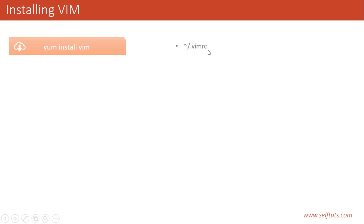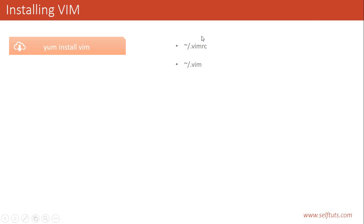Vim basically depends upon the .vimrc file for all configuration. Every configuration that changes the behavior of Vim is written inside this file. The other thing Vim depends upon is the .vim folder, which is also present inside the home directory. The .vimrc is a single file containing settings related to Vim, while .vim is a folder containing all files, plugins, repositories, and color schemes used by Vim. When Vim starts, it searches for a .vimrc file in your home directory and loads settings based on it.